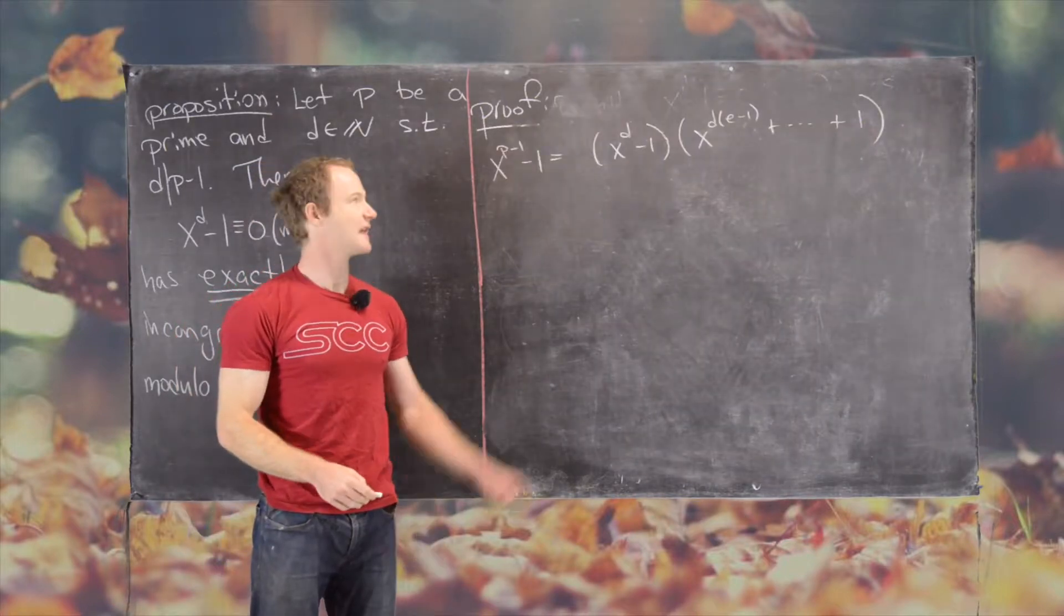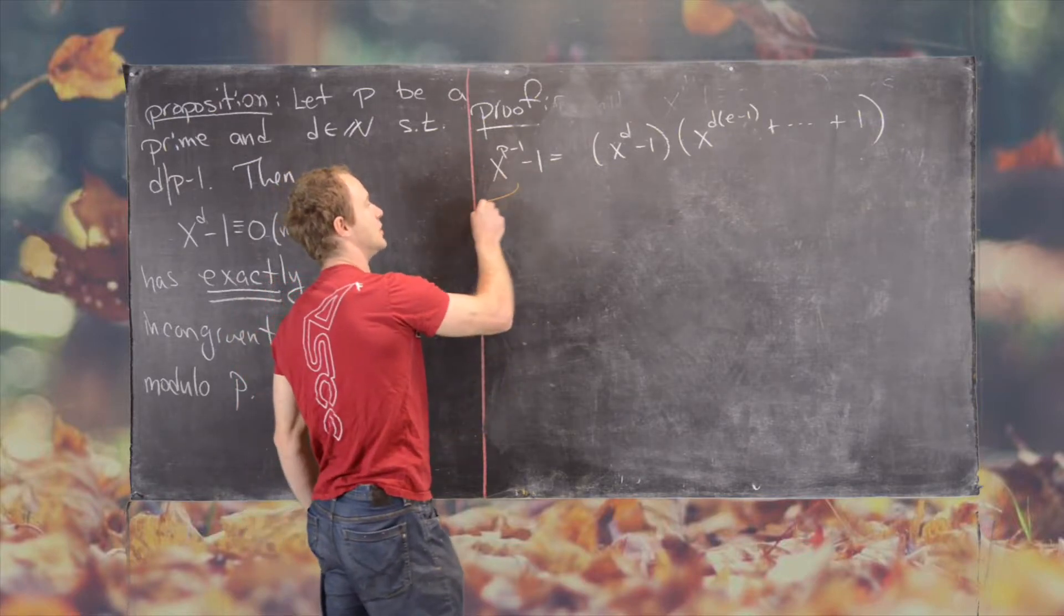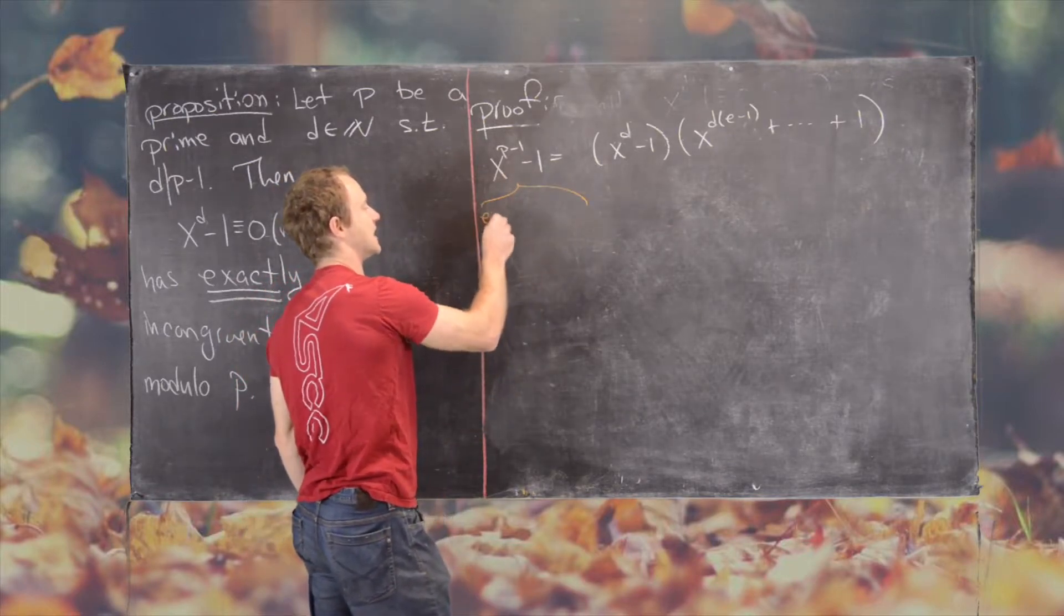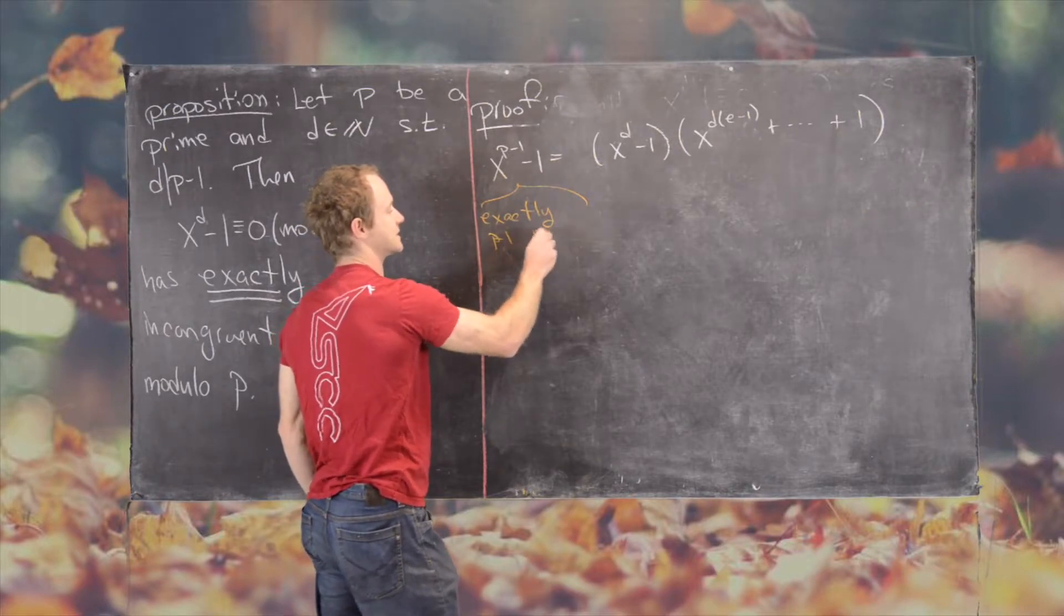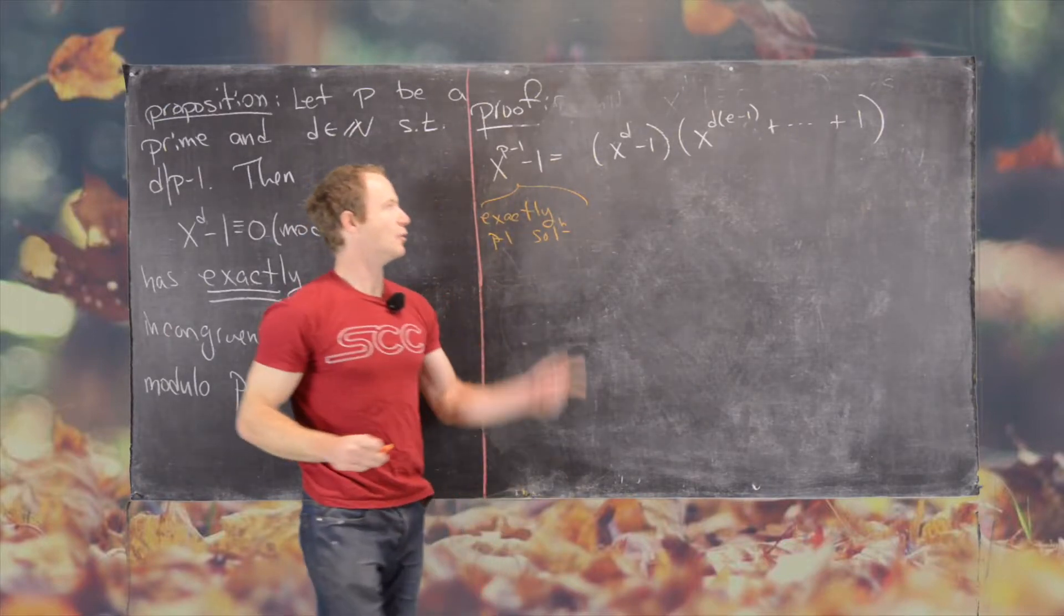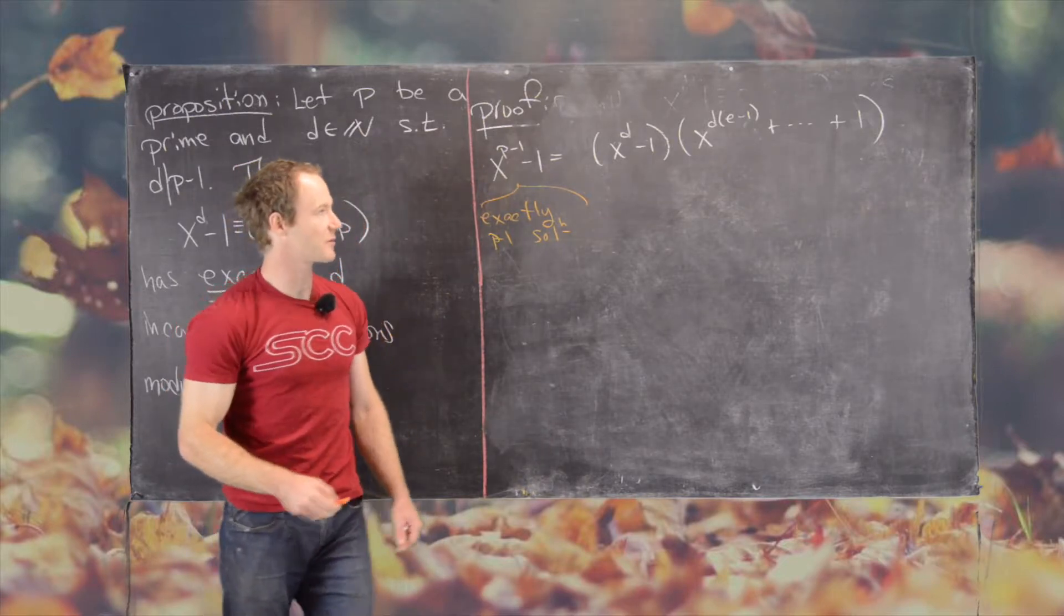So we left off having factored x to the p minus 1 in this following form. And we also noticed that this has exactly p minus 1 solutions. And I mean when we set this congruent to 0 modulo p.